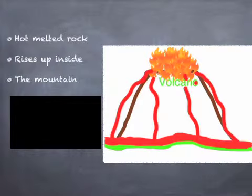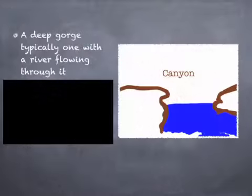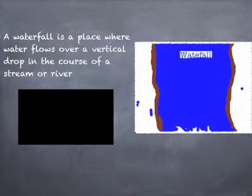Hot melted rock rises up inside the mountain. The rock erupts to the surface of a stream or river.